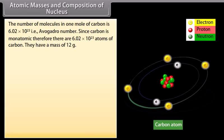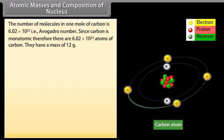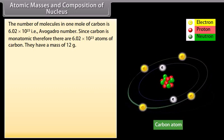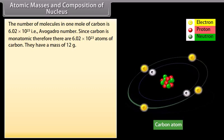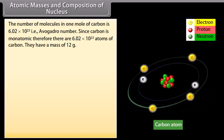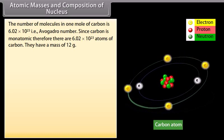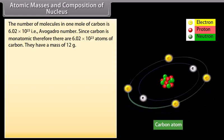Atomic masses and composition of nucleus. The number of molecules in one mole of carbon is 6.02 × 10²³, that is Avogadro number. Since carbon is monoatomic, therefore there are 6.02 × 10²³ atoms of carbon. They have a mass of 12 gram.